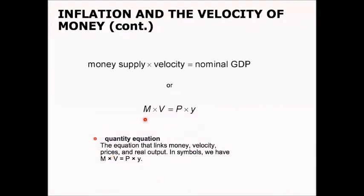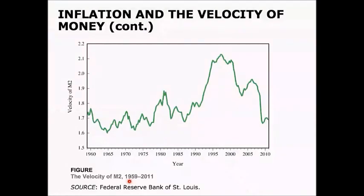Now, when we look over time at what happens to velocity, this becomes a very powerful equation. This is the velocity of M2 from 1959 to 2011. And you can see it goes up and down, but it's going up and down between 1.6 and 2.1 in general. Now what that says is its growth rate is relatively constant over time.